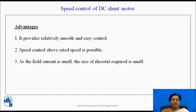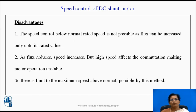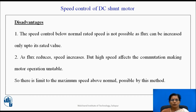Advantages of the field control method: it provides relatively smooth and easy control; speed control above rated speed is possible; and as the field current is small, the size of rheostat required is small. Disadvantages: speed control below normal speed is not possible, as flux can only be increased up to rated value. As flux reduces, speed increases, but high speed affects commutation, making motor operation unstable. So there is a limit to the maximum speed above normal possible by this method.